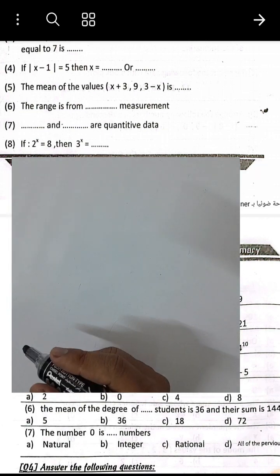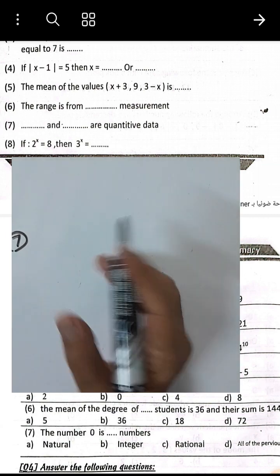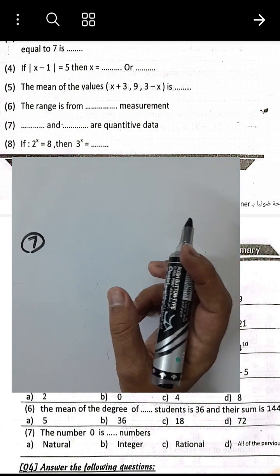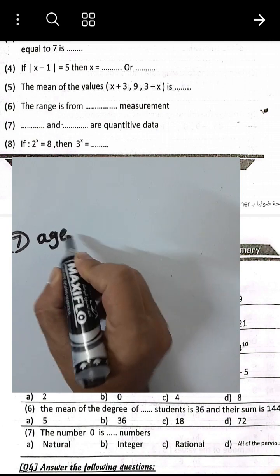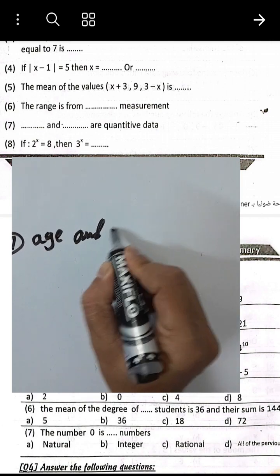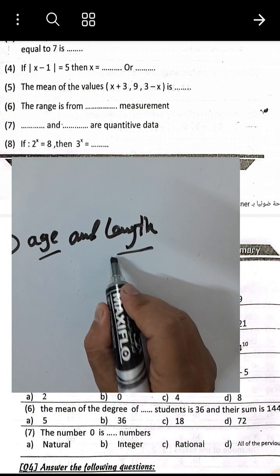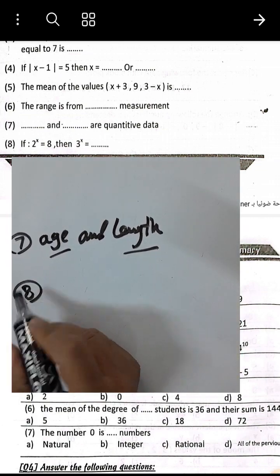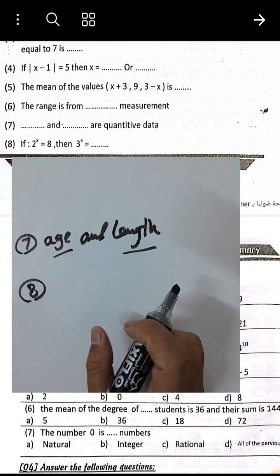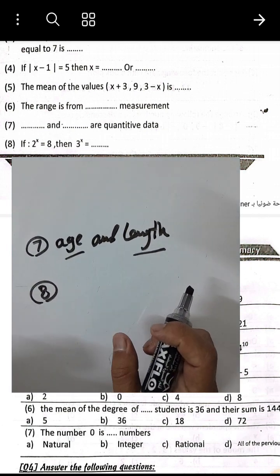Question 7: Quantitative data are quantities that vary as numbers. Examples include age, length, and weight — anything with digits.